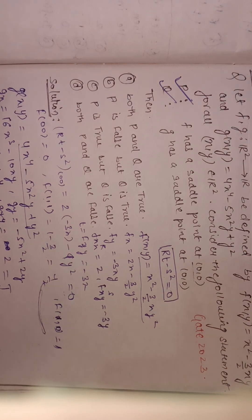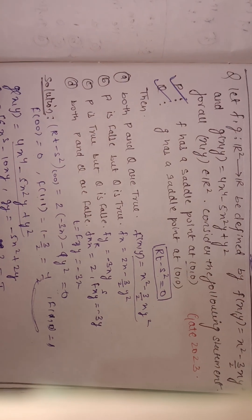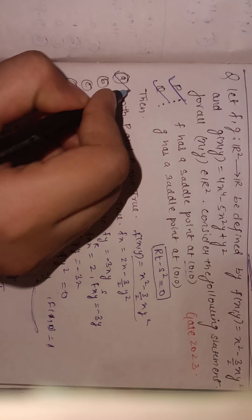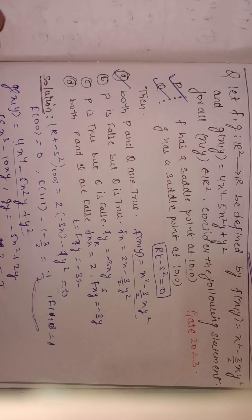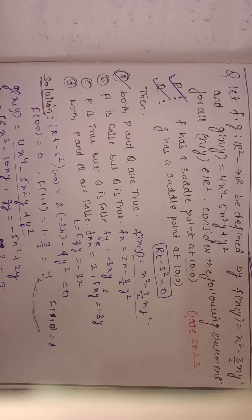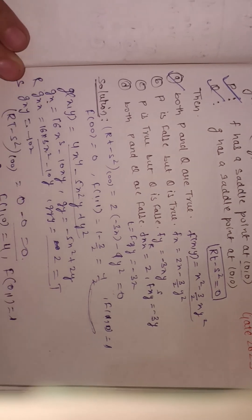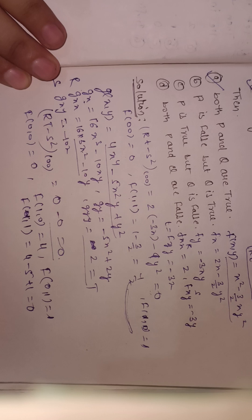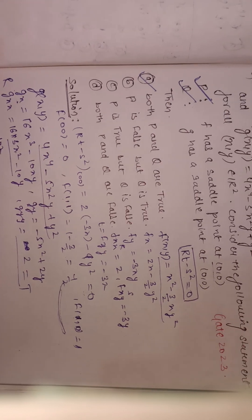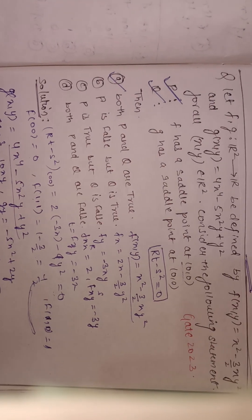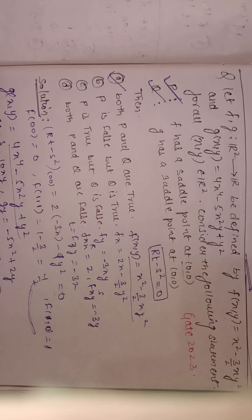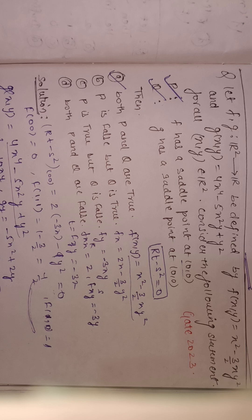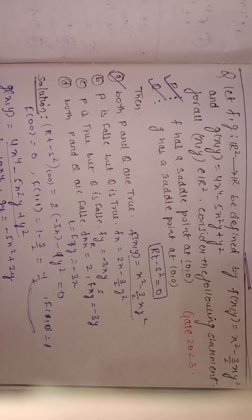So both statements P and Q are true — f and g both have saddle points at (0,0). The correct option is A: both P and Q are true. This was the solution of this question based on functions of several variables, maxima, minima, and saddle points. If you liked this video, hit the like button, and subscribe to the channel for more such videos. Thank you for watching.